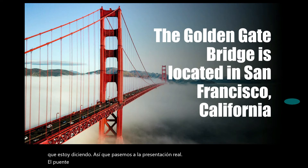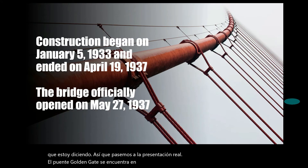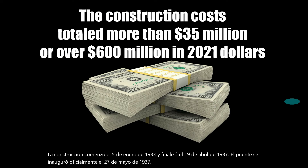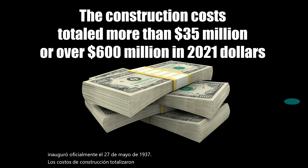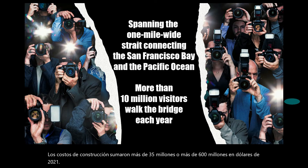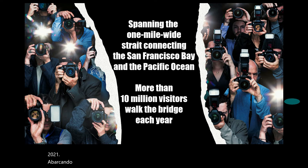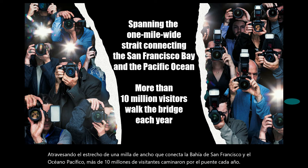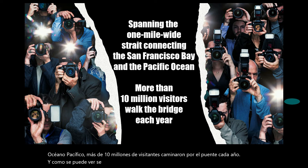The Golden Gate Bridge is located in San Francisco, California. Construction began on January 5th, 1933 and ended on April 19th, 1937. The bridge officially opened on May 27th, 1937. The construction cost totaled more than 35 million dollars, or over 600 million in 2021. Spanning the one-mile-wide strait connecting the San Francisco Bay and the Pacific Ocean, more than 10 million visitors walk the bridge each year.